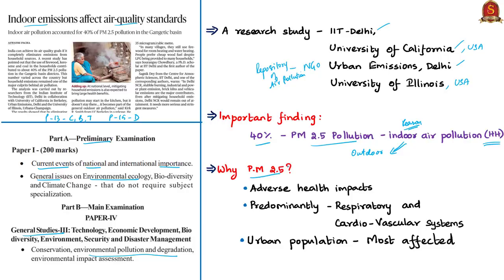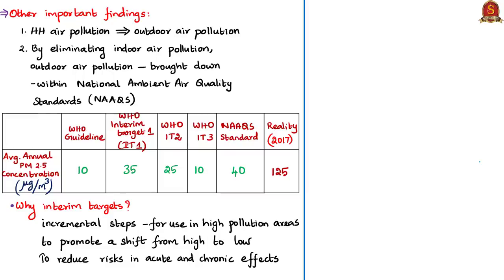PM2.5 is given importance because it leads to adverse health impacts, predominantly affecting the respiratory and cardiovascular systems, with urban populations most affected. Currently around 40% of India's population lives in urban areas, estimated to reach 50% by 2030. Indoor air pollution accounts for nearly 10 lakh deaths per year in India. In 2017, India's average annual PM2.5 concentration was 125 micrograms per cubic meter.